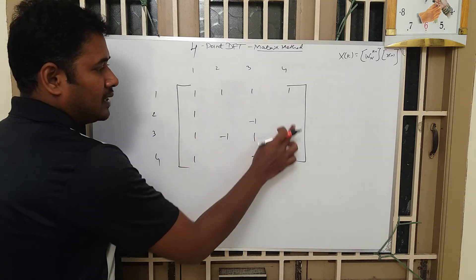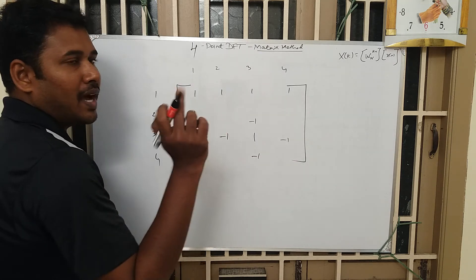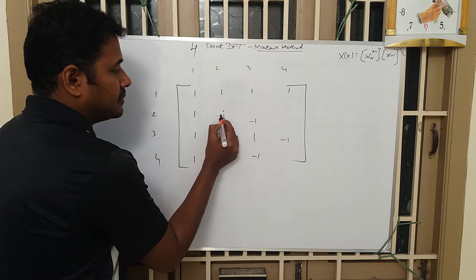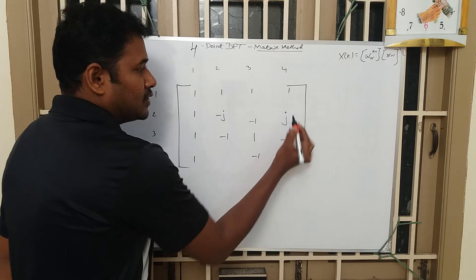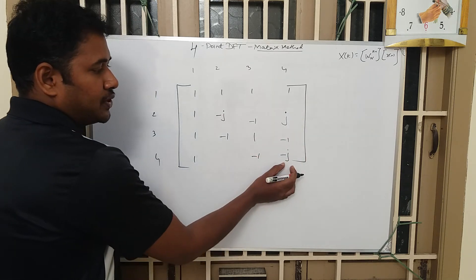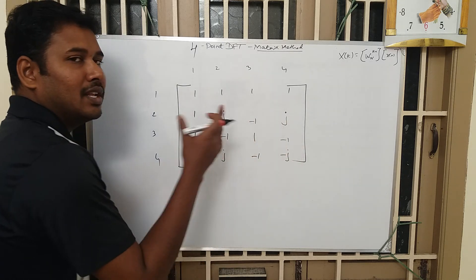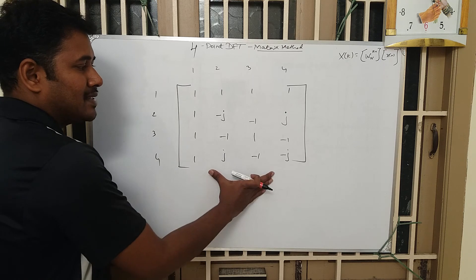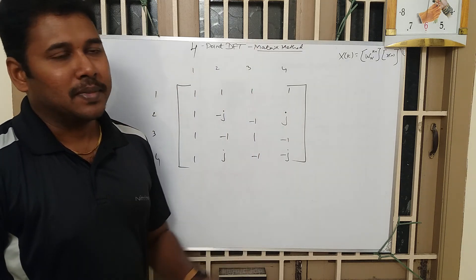Now we will be left with 4 unknown values. Take the first value as -j. Write the conjugate of -j, which is +j, then the conjugate of +j, which is -j, then the conjugate of -j, which is +j. You can even go in the reverse order and still get the correct matrix. This is the standard matrix for finding the 4-point DFT using the matrix method.